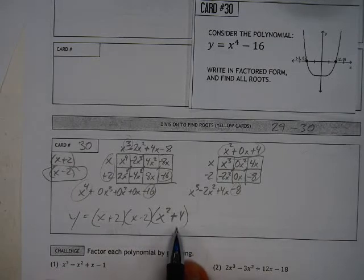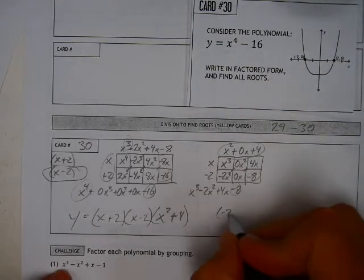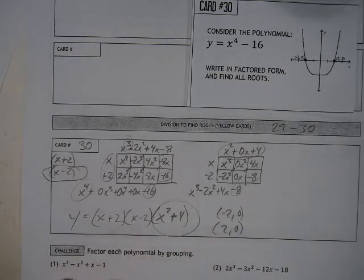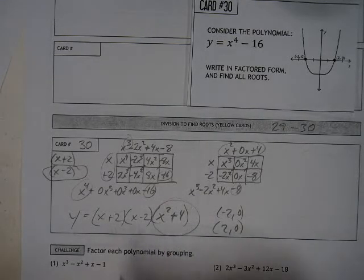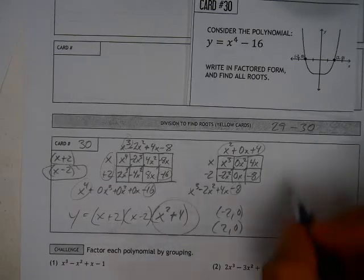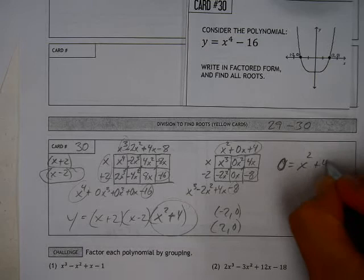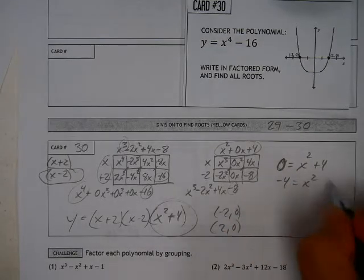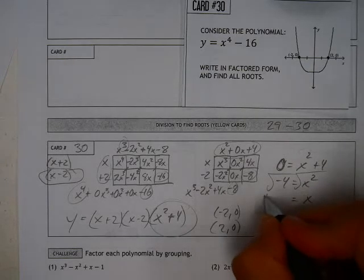But when it comes to the roots, well, for one thing, I already have two of the roots. One of my roots is negative 2, 0. The other root is 2, 0. This, then, is the source of my other two roots. Well, I can set it equal to 0 and do the quadratic formula, or I can simply say, if I know that 0 equals x squared plus 4, if I subtract 4 from both sides and get x squared, now when I take the square root of both sides, I'll find that x is equal to plus or minus.